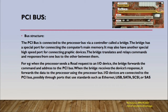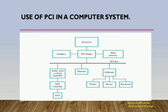The bridge translates and relays commands and responses between the PCI bus and the processor bus. For example, when the processor sends a read request to an I/O device, the bridge forwards the command and address to the PCI bus. When the bridge receives the device response, it forwards the data to the processor using the processor bus. I/O devices are connected to the PCI bus, possibly through ports.